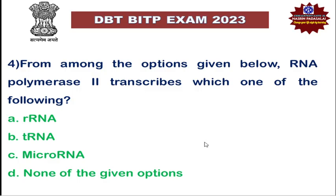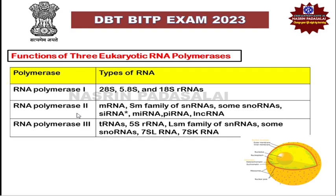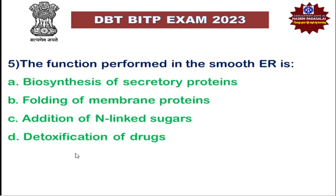So to summarize: ribosomal RNA is transcribed by RNA Polymerase I; transfer RNA is transcribed by RNA Polymerase III; microRNA and other small interacting RNAs, Piwi-interacting RNA, are transcribed by RNA Polymerase II. RNA Polymerase I is present in the nucleolus, while RNA Polymerases II and III are present in the nucleoplasm.